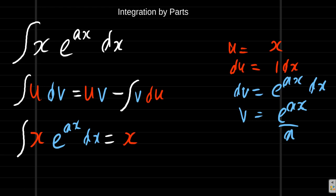Minus the integral of v, v is e to the ax over a, times du, du is 1 dx.